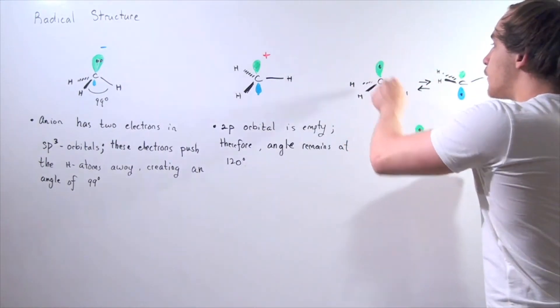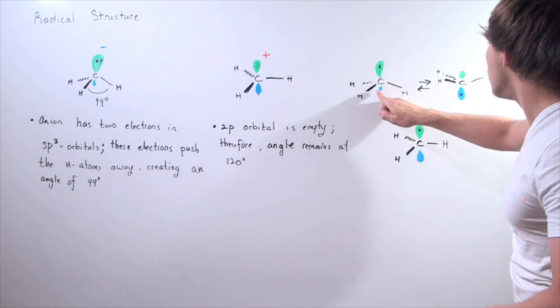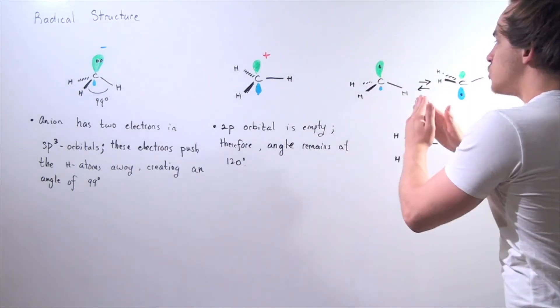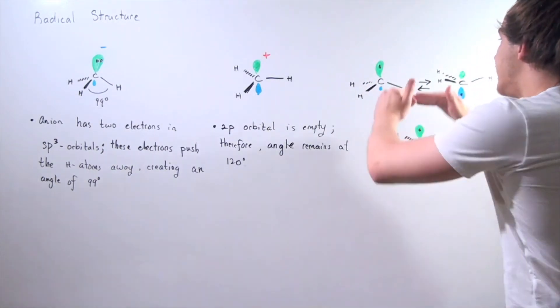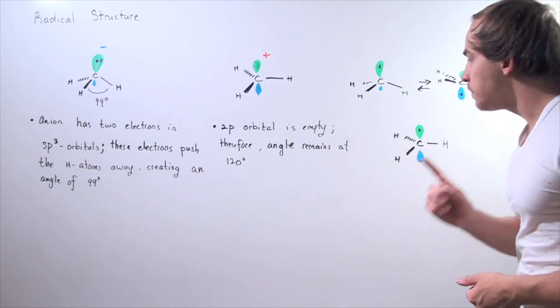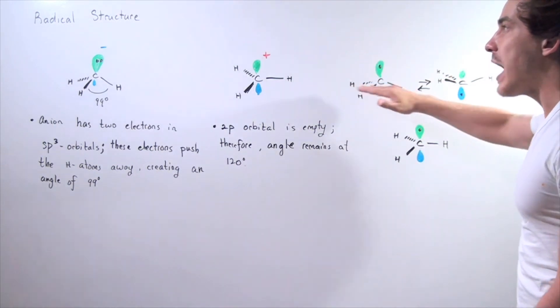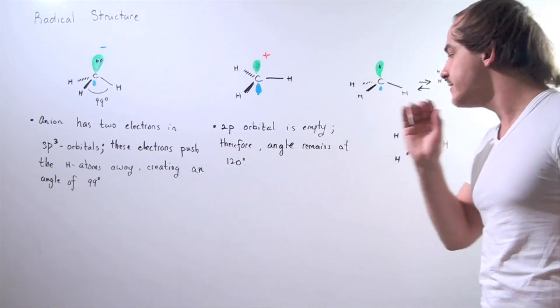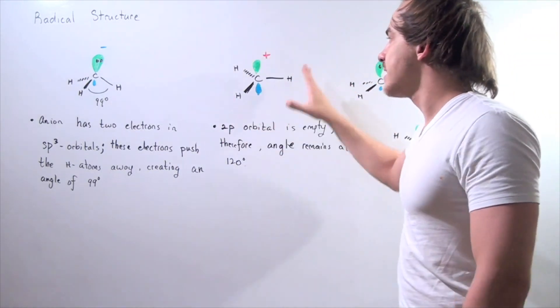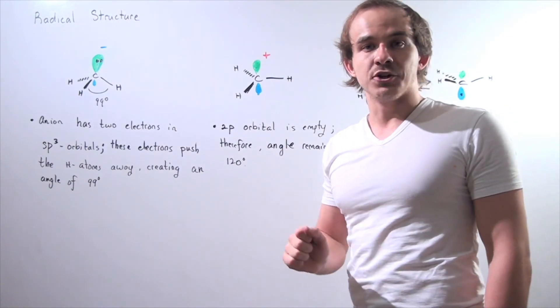In fact, this electron jumps from one orbital lobe to the other, creating a quick jumping motion similar to how an umbrella inverts in the wind. So for approximation purposes, we can assume that the structure of the methyl radical is effectively planar, in the same way that the methyl cation is also planar.